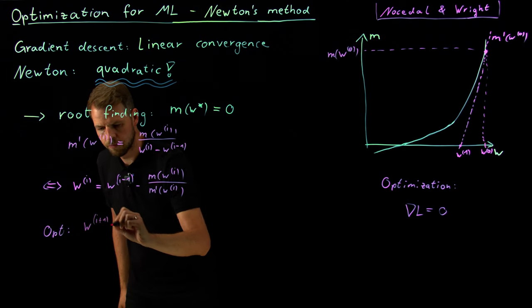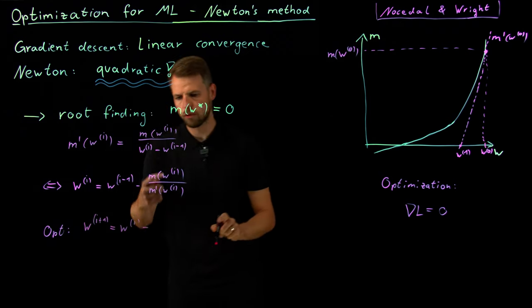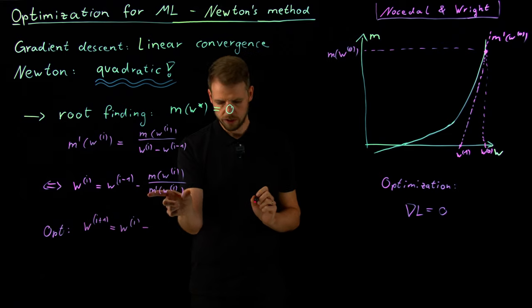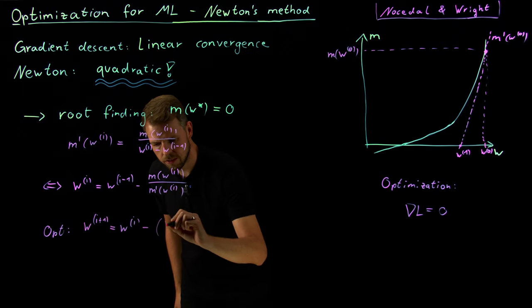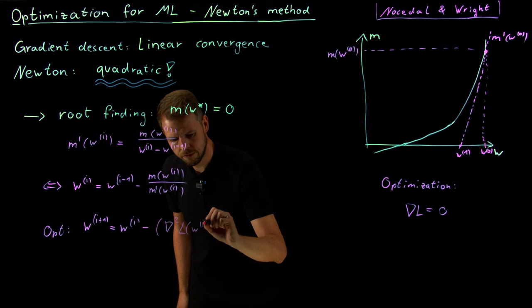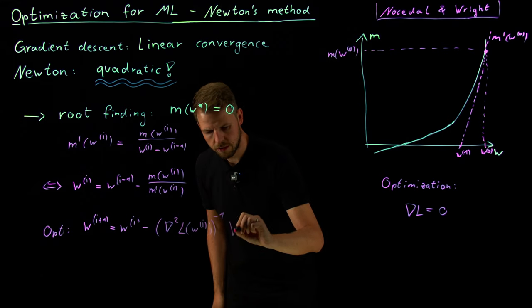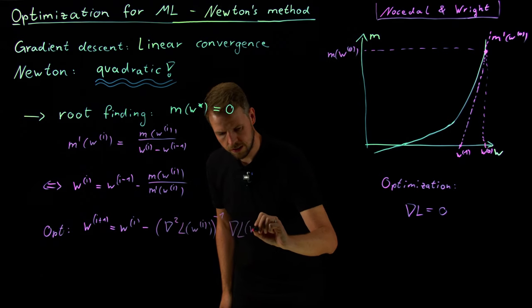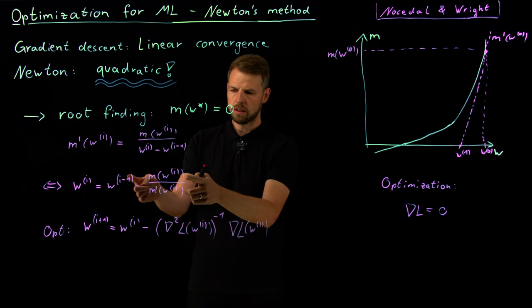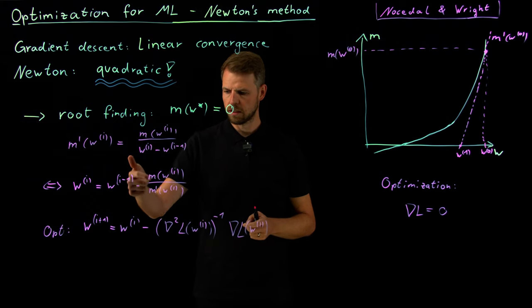W I plus one is W I minus, and now I have to divide by a derivative. And if this is the gradient of the loss function, this is the second-order derivative, or the Hessian matrix. So what I have here is the second-order derivative of my loss function at W I, but now inverted, times the gradient of the loss function for W I. And so you see, it's basically this one, only that I have to add one degree of derivation for the derivative. This is now a gradient, this is now the Hessian matrix.